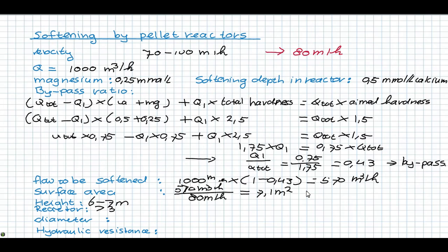Because the flow is small, we can take this minimum in this design. The diameter of one reactor will then be that is the total surface area divided by 7.1 divided by 3 reactors. And then we come to a diameter per reactor of 1.7 meter.